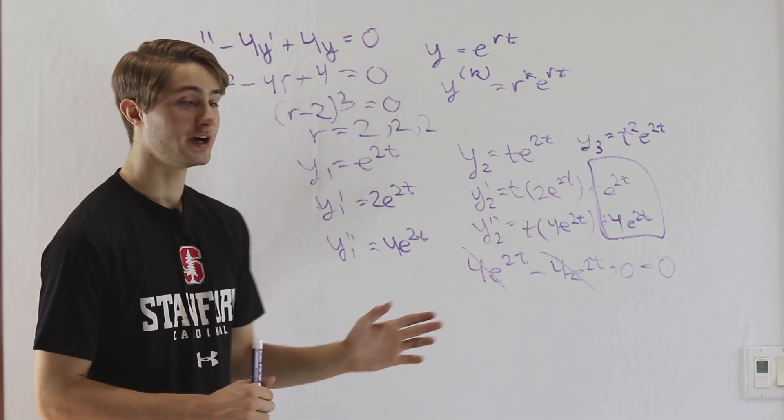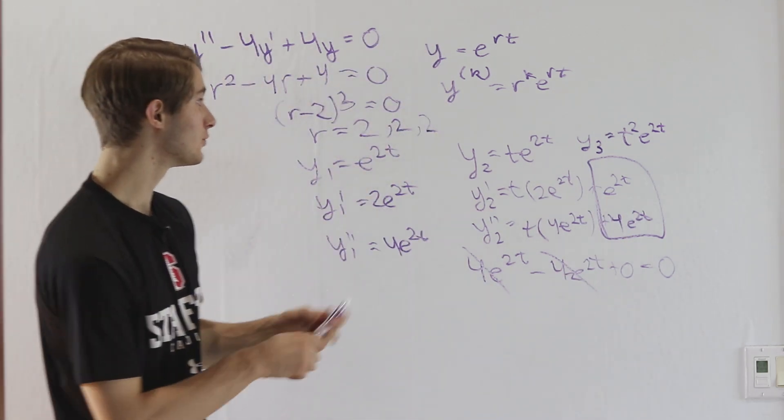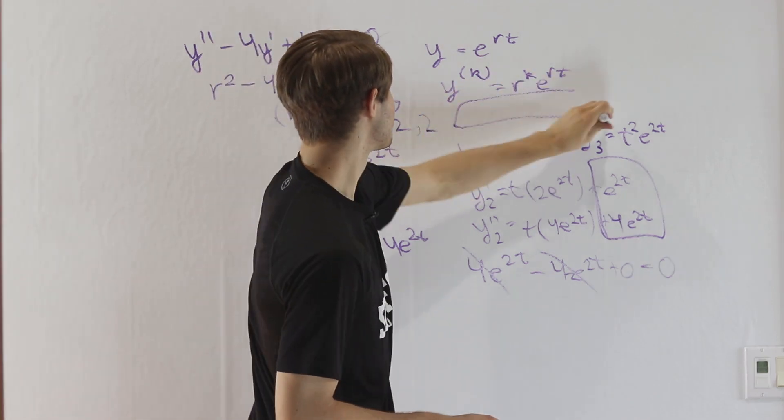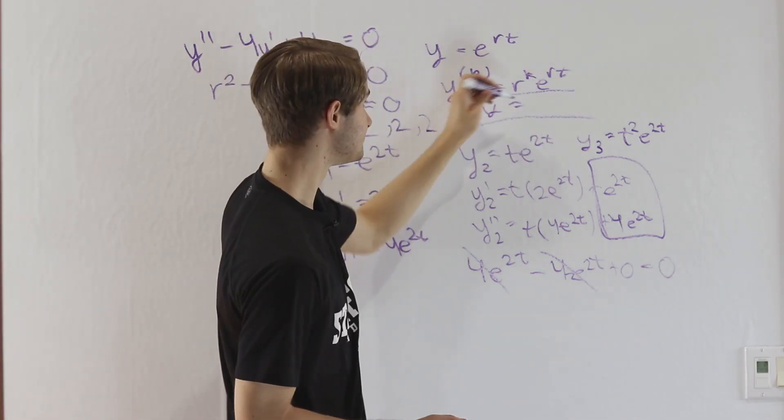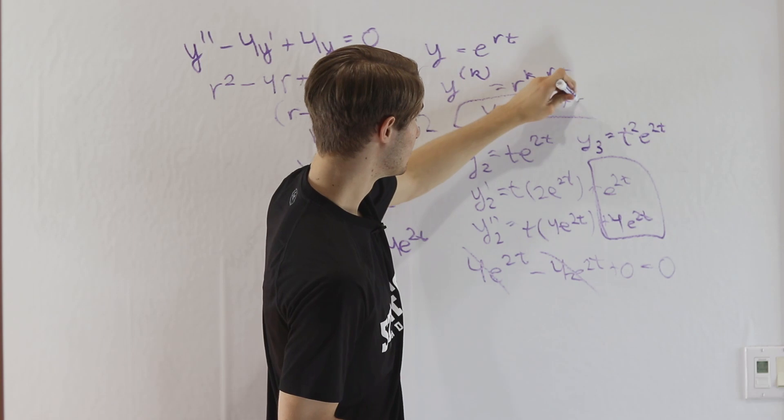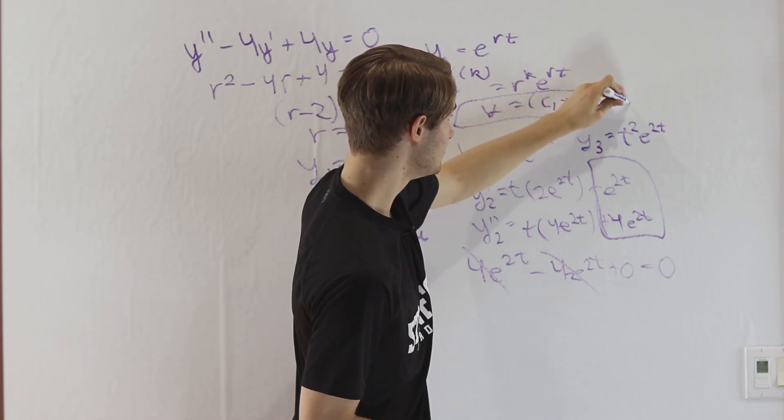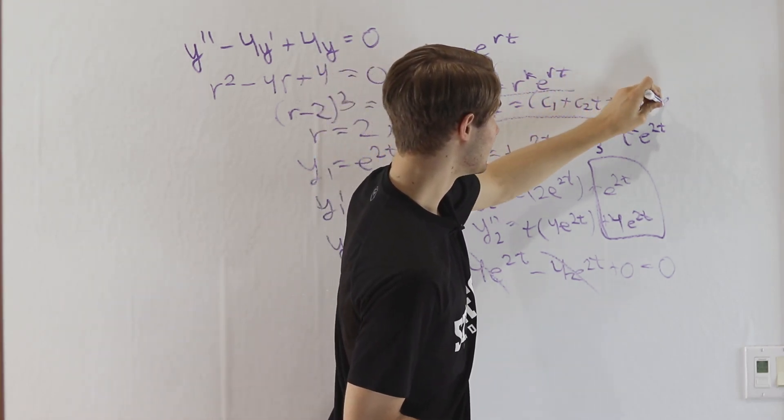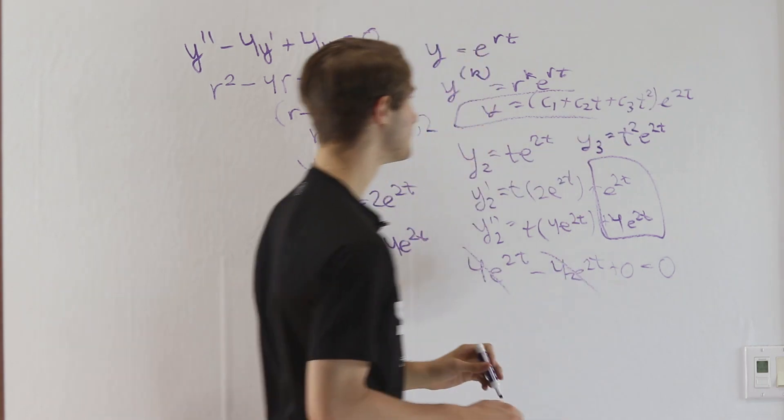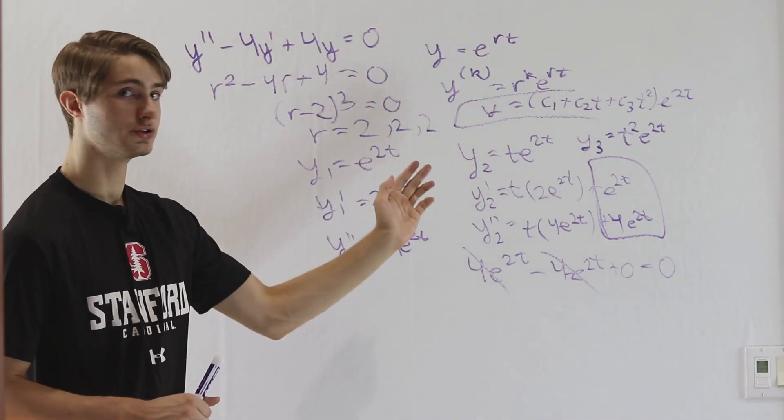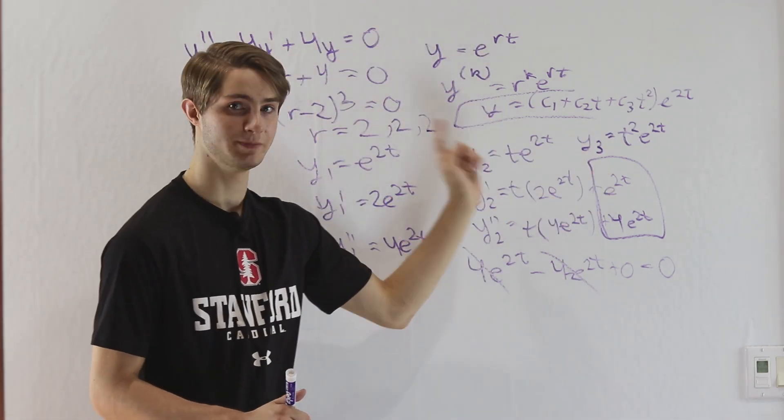And then if you wanted to find your solution in a general form, it would look like this. You get y equals c1 plus c2t plus c3t squared e to the 2t. And that's going to be what your solution looks like any time you get a repeated root.